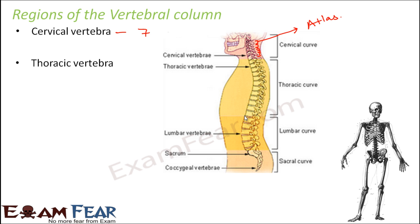The next region is the thoracic vertebra. It is called thoracic because it is located in the thoracic cavity. There are a total of 12 vertebrae in the thoracic curve. These thoracic vertebrae are located in the chest region and they are less flexible — in fact, they are stronger and less flexible due to the presence of ribs.